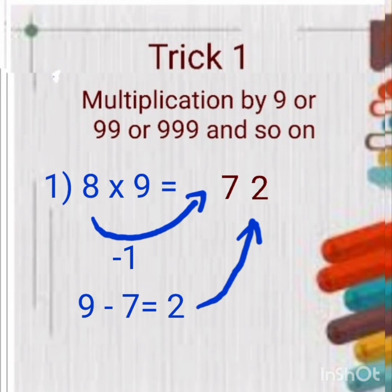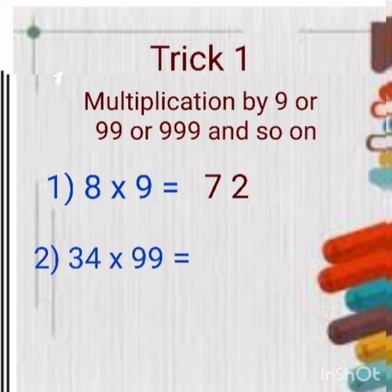Again I will repeat once. First you will subtract 1 from the first number. So 8 minus 1 is 7. After that you just subtract 7 from this 9, and you will get your answer, that is 72. Our second example.